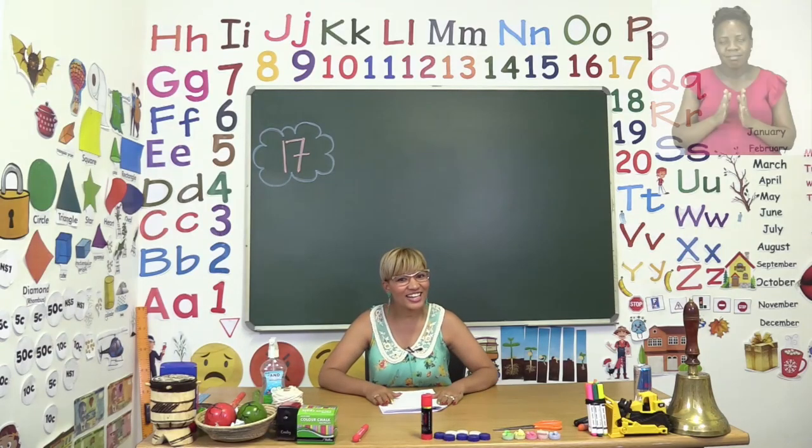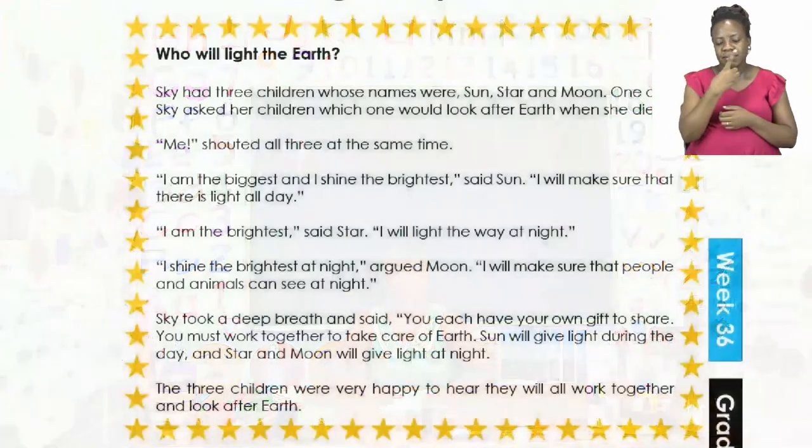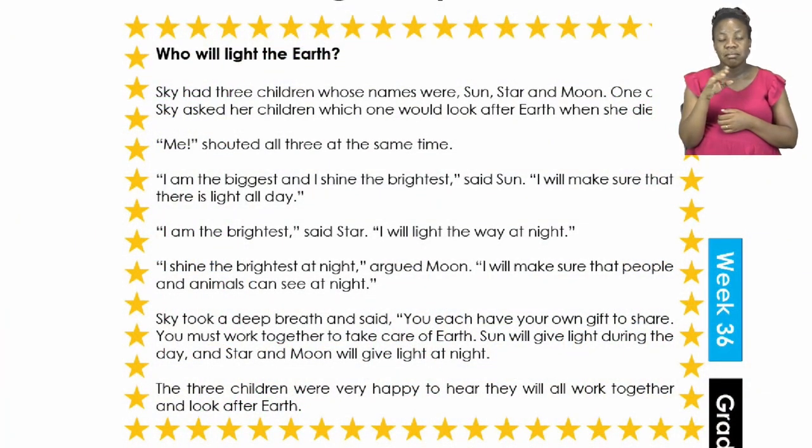Let's start our lesson on page 17. Now here we have a reading comprehension and the heading of this reading comprehension is who will light the earth. Let's read. Skye had three children whose names were sun, star, and moon. One day Skye asked her children which one would look after earth when she died. Me shouted all three at the same time.